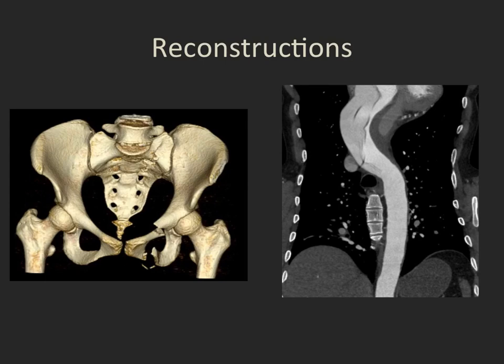On the left is a 3D reconstruction of the pelvis in a patient with multiple complex pelvic fractures. This image can be rotated and manipulated for the orthopedic surgeon to plan surgery. On the right is a multi-planar reconstruction to look at the thoracic aorta. The technologist has laid out the aorta from the heart down through the diaphragm, and this is a patient with an aortic dissection, allowing us to see in one image the plane of that dissection from the ascending into the descending aorta.